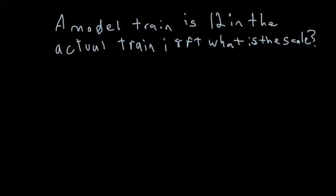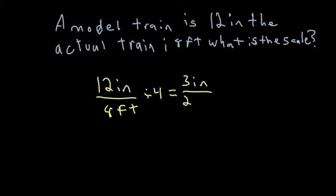A model train is 12 inches, the actual train is eight feet. What is the scale? Again, we're going to do a ratio of the model, which is 12 inches, to the actual train, which is eight feet. Again, if you can reduce this, you need to. So we can divide both of those by four to get 12 divided by four is three inches equals eight divided by four is two feet.